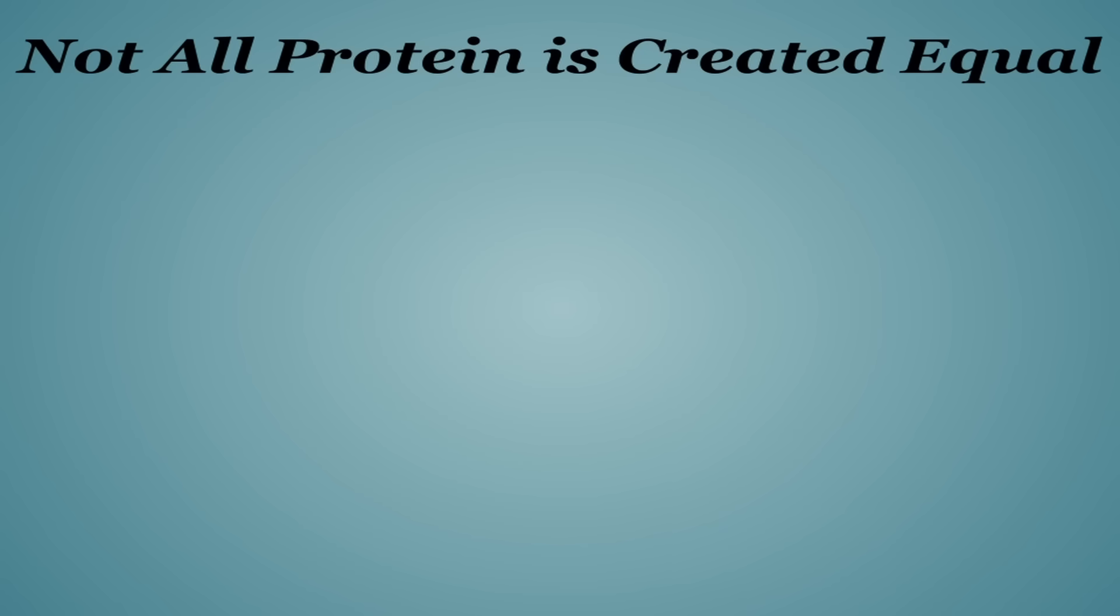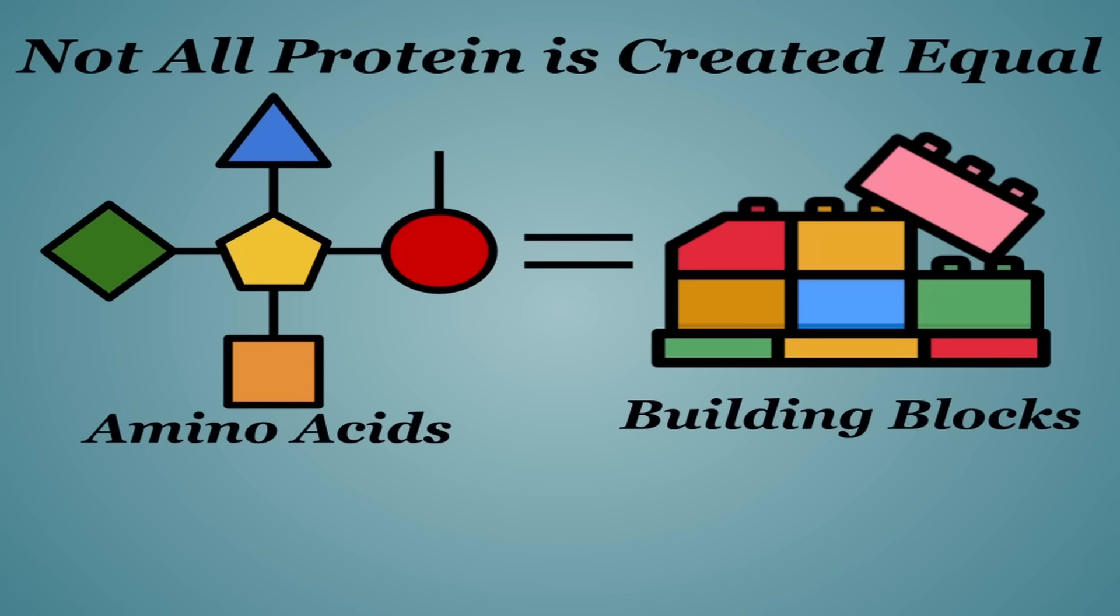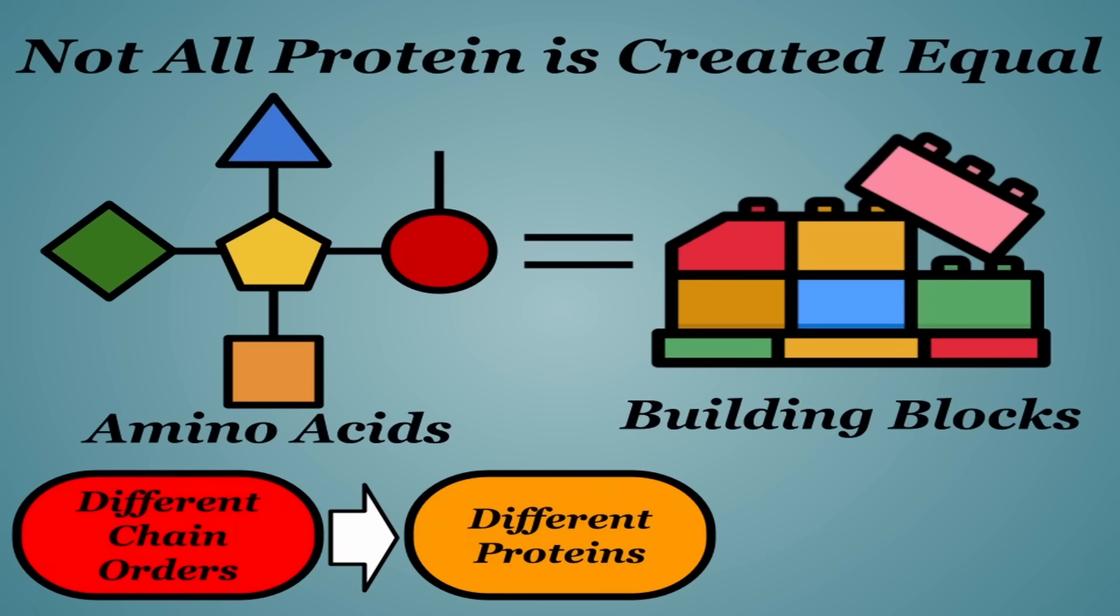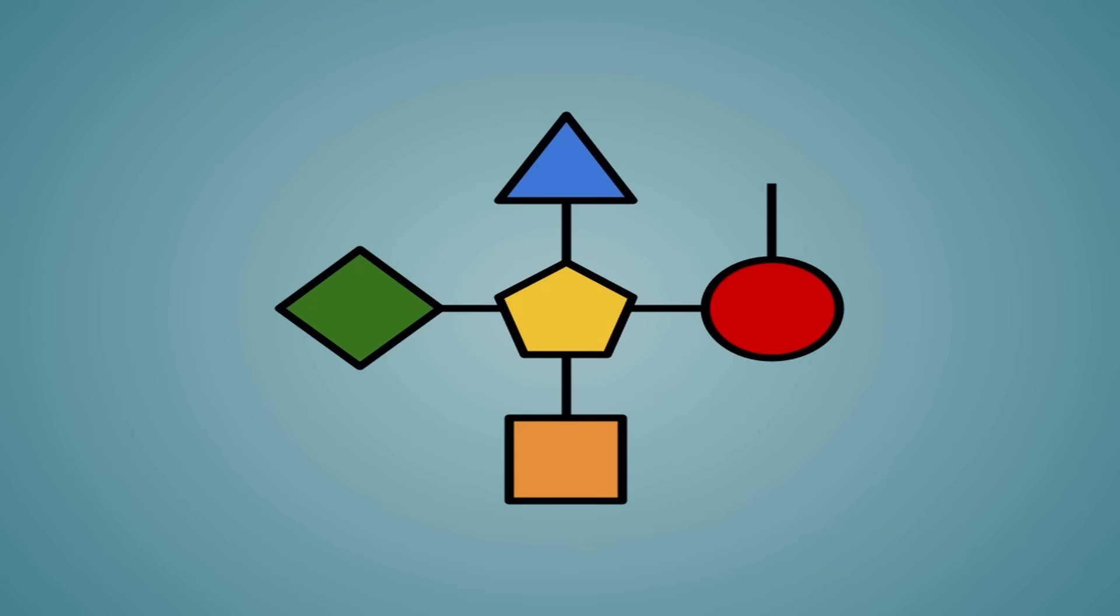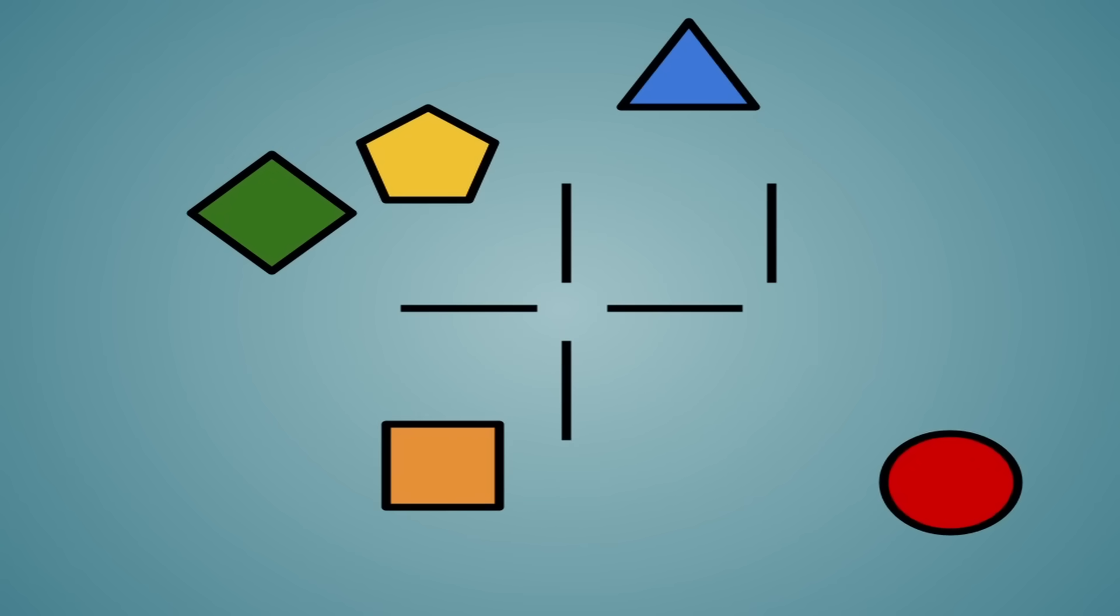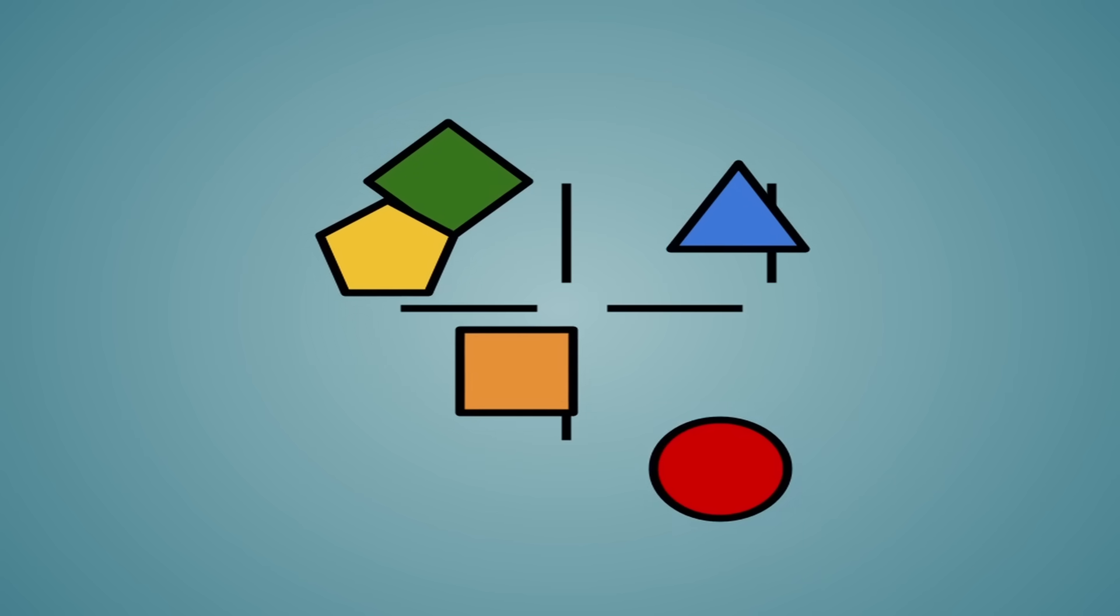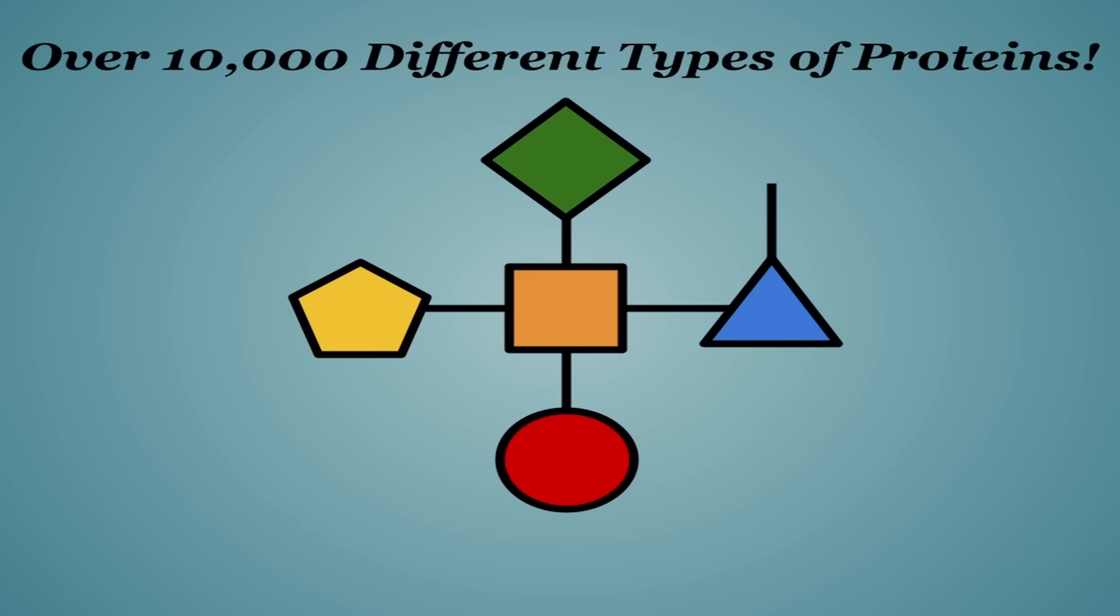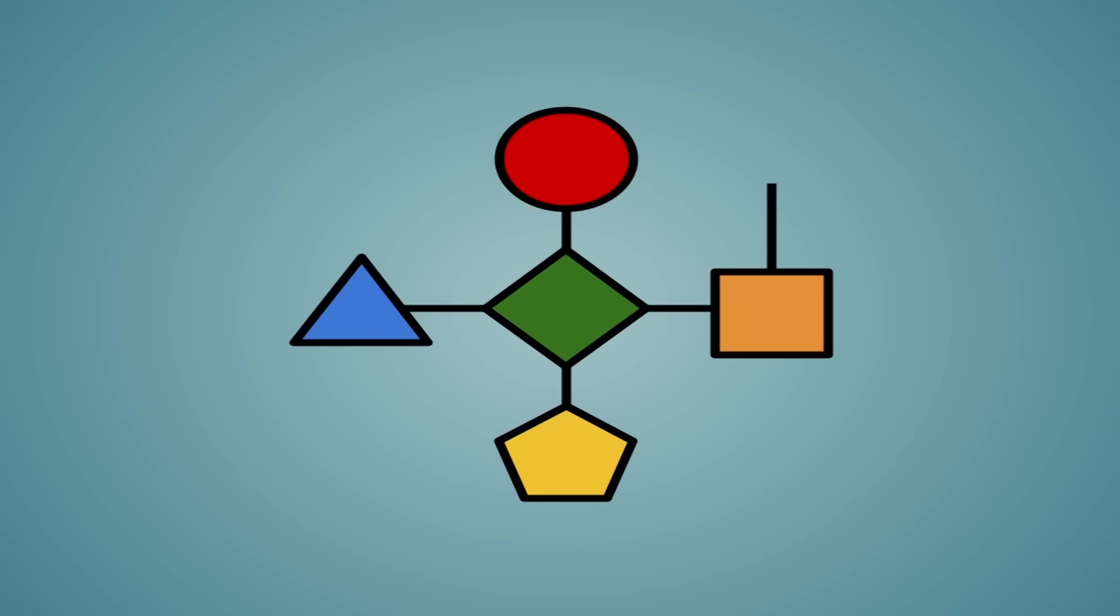The proteins that the human body needs are made up of compounds called amino acids, essentially building blocks that the body uses in different chain orders to make different proteins with different uses. When you consume protein, your digestive system uses enzymes to break it down into the individual amino acids that are then absorbed and built back up into over 10,000 different types of proteins.